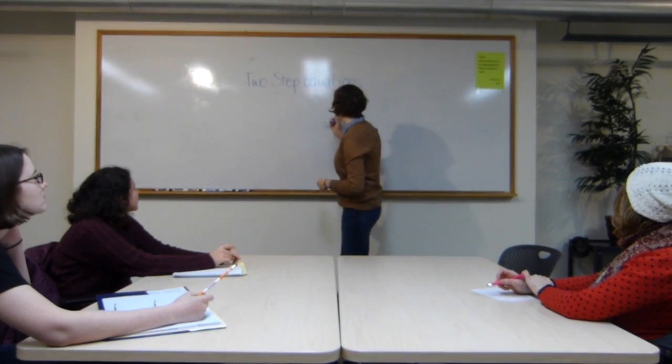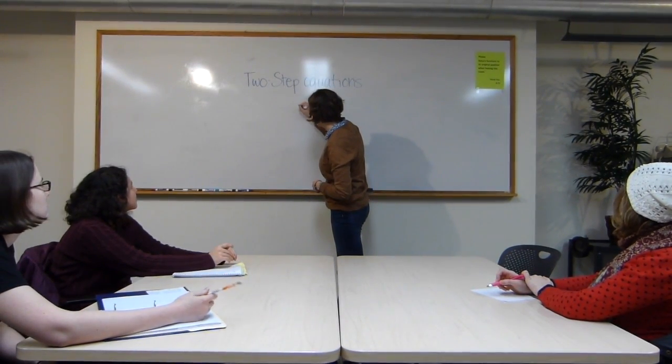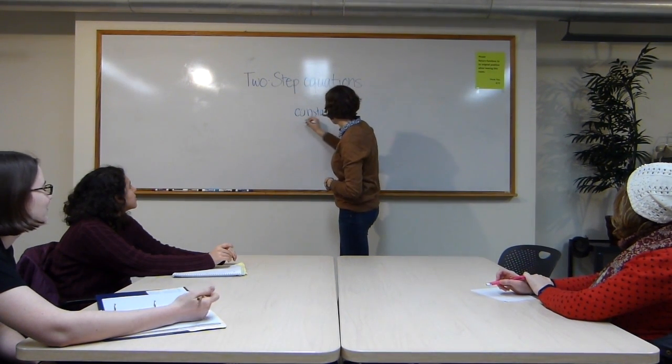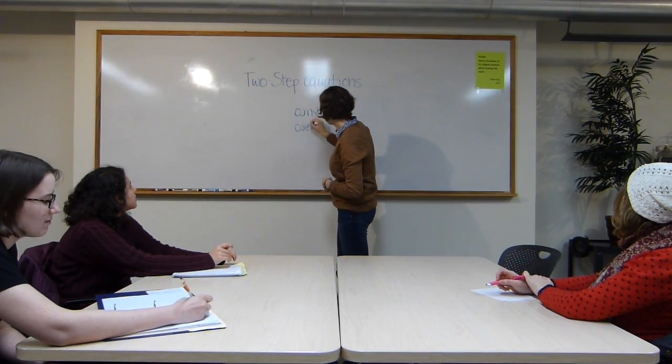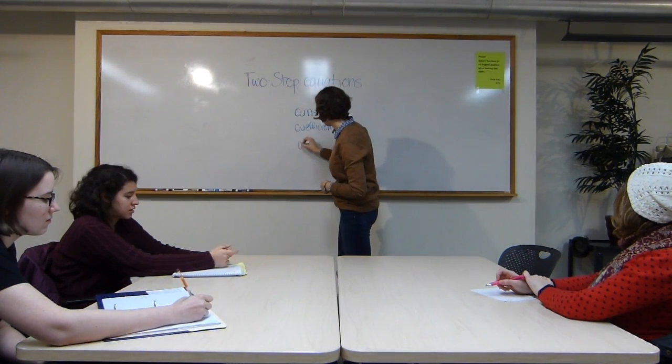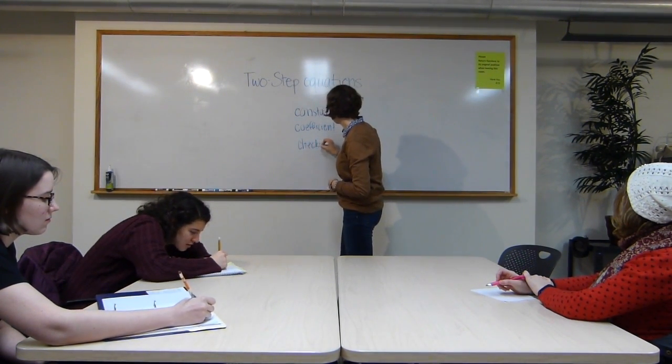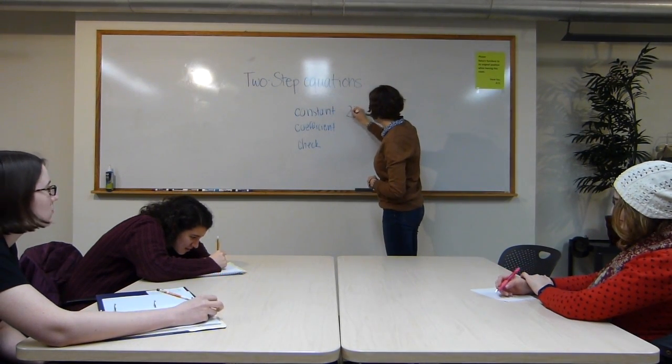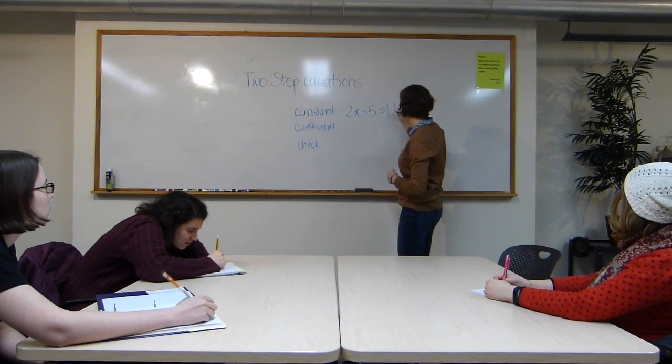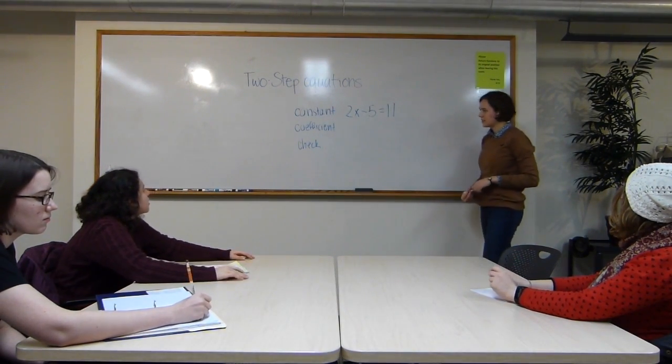So we can work on two-step equations by using the three C's. So first constant, then coefficient, and then checking. So we'll use the example 2x minus 5 is equal to 11. Does someone want to tell me what the first step is?